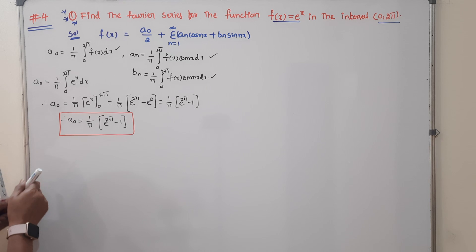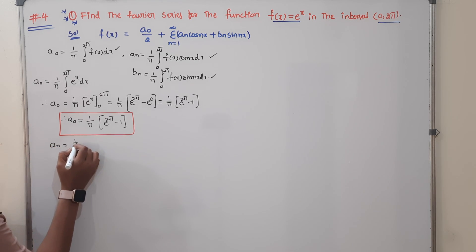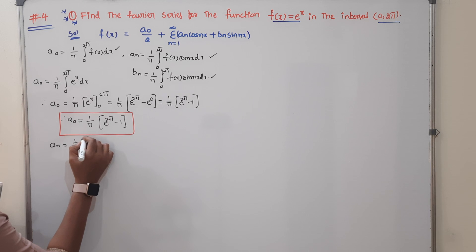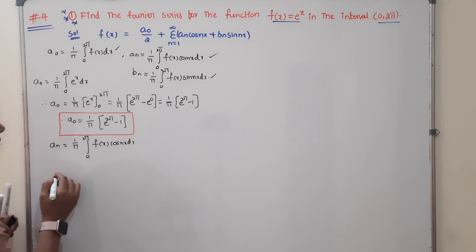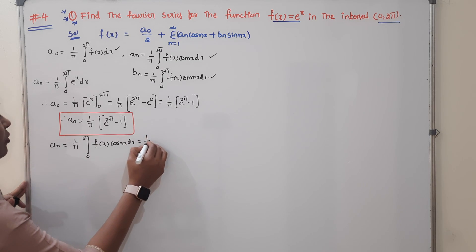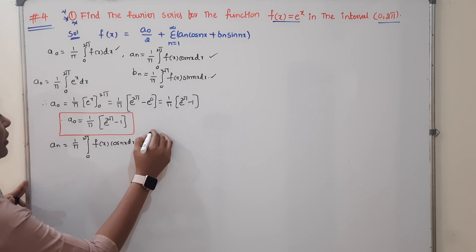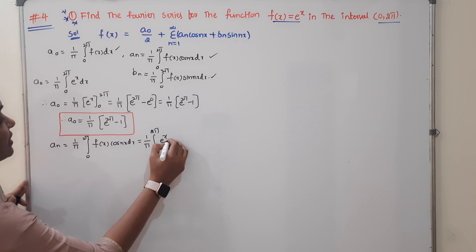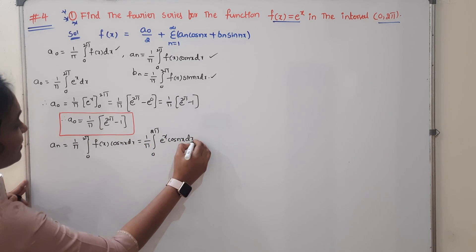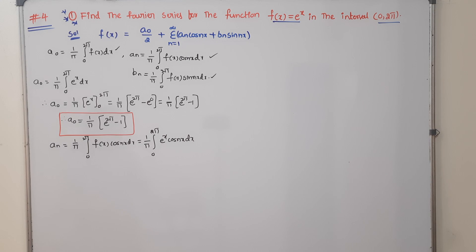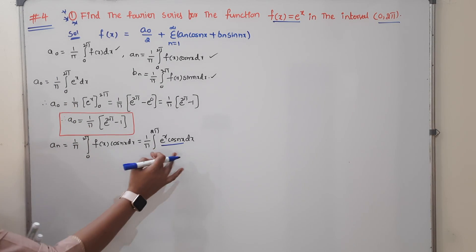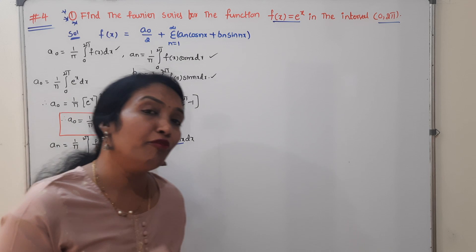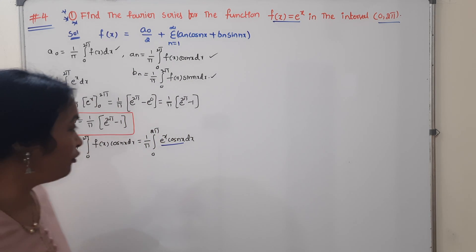Now I have a0. Let me find an. The an formula is (1/π)·∫ from 0 to 2π of f(x)·cos(nx) dx. Substituting f(x) = e^x, we get (1/π)·∫ from 0 to 2π of e^x·cos(nx) dx. Before solving, note this important formula — each and every problem in the Fourier series will use these two related formulas.